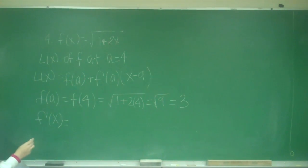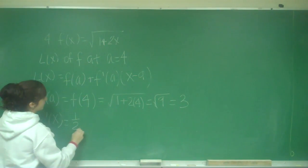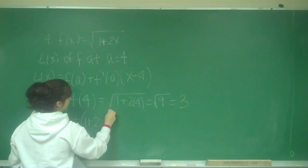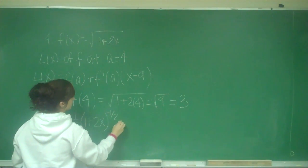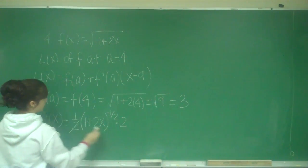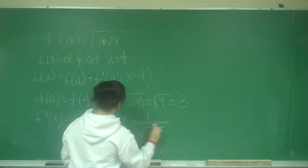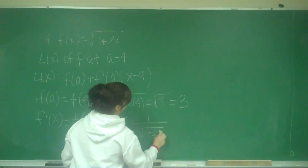So f'(x) would be 1/2 times (1 + 2x) to the negative 1/2 times 2. So my 2's will cancel, so I'm just left with 1 over the square root of 1 plus 2x.